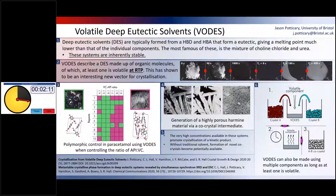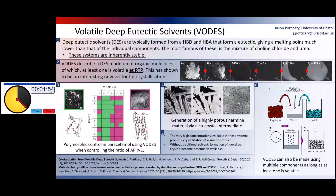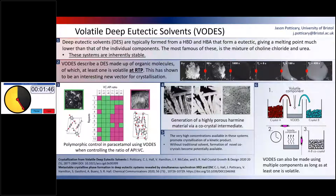What we've been able to do with this specifically — if you look at box three — is control the polymorph of paracetamol. We've been able to make form two paracetamol at room temperature and pressure just out of these VODES. With the isomer metacetamol, we've also been able to control morphology. So these VODES are giving us both morphological and polymorphic control over these crystal forms.